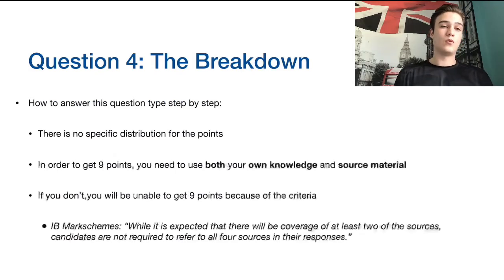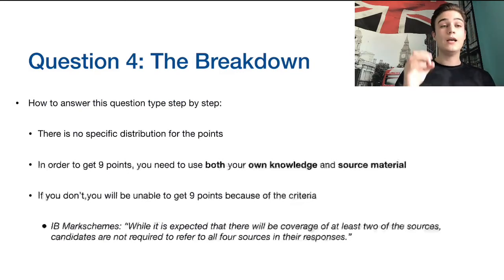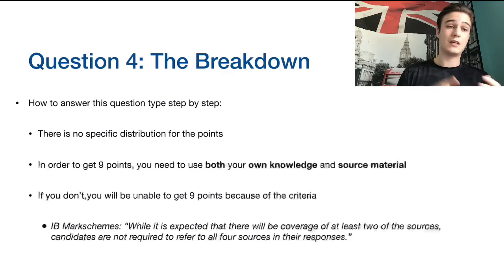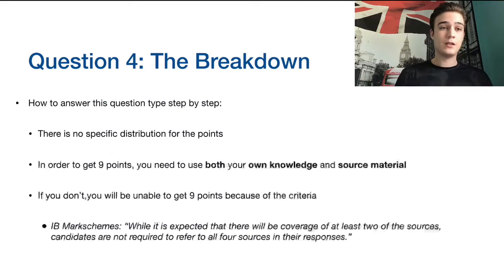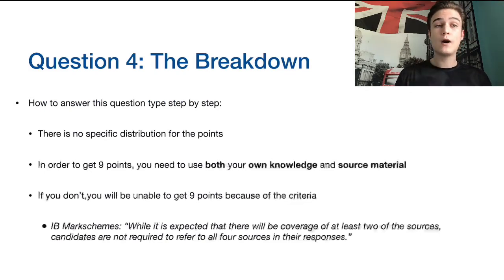This is what IB mark schemes for past paper ones have stated. The quotation reads: 'While it is expected that there will be coverage of at least two of the sources, candidates are not required to refer to all four sources in their responses.' So you need at least two sources — if you have fewer, you'll probably be capped around six or seven marks. You're also not required to use all four. I always tell my students to try to use three sources. If you can use four, great, but don't force sources in. Have at least two and preferably three.